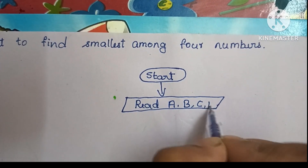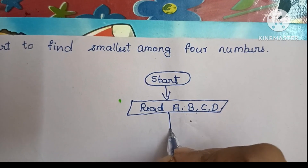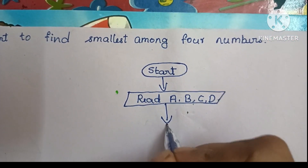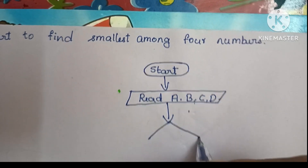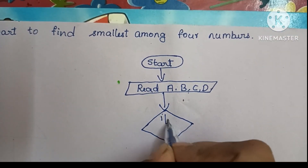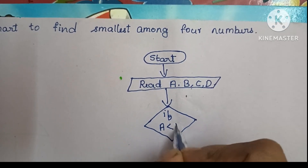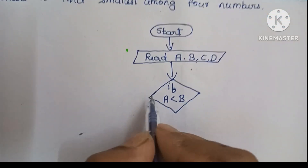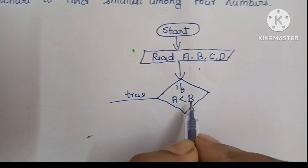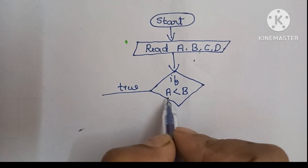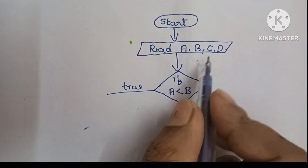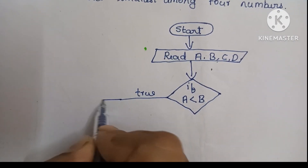Next, to find the smallest among four numbers, first we have to compare A with B. If A is less than B, and this condition is true, then A is smallest so far. Next, we have to compare A with C.